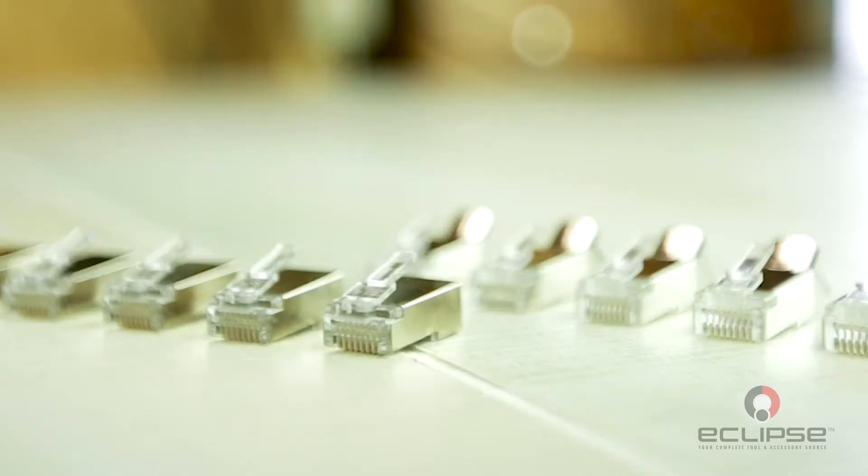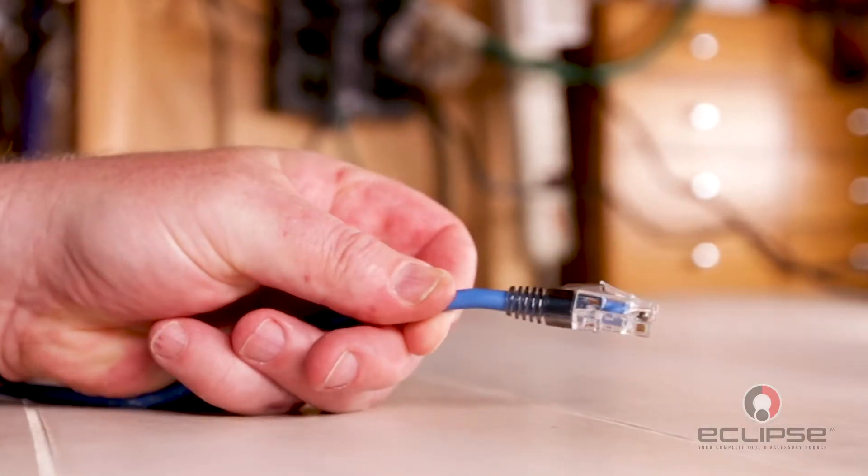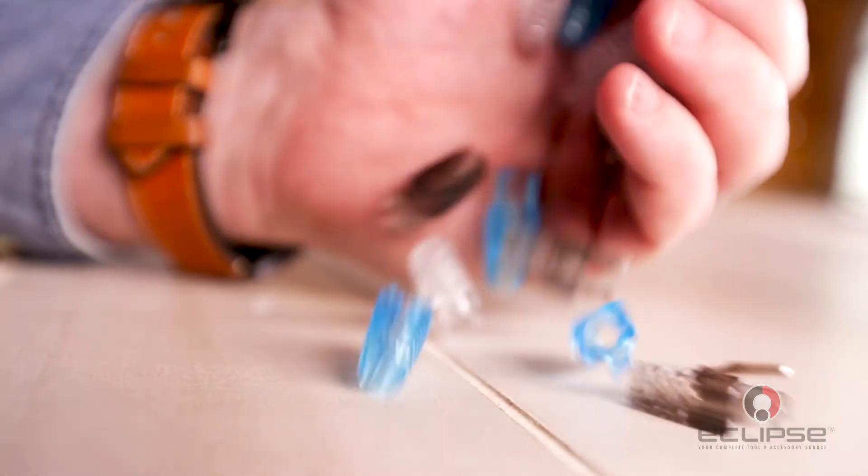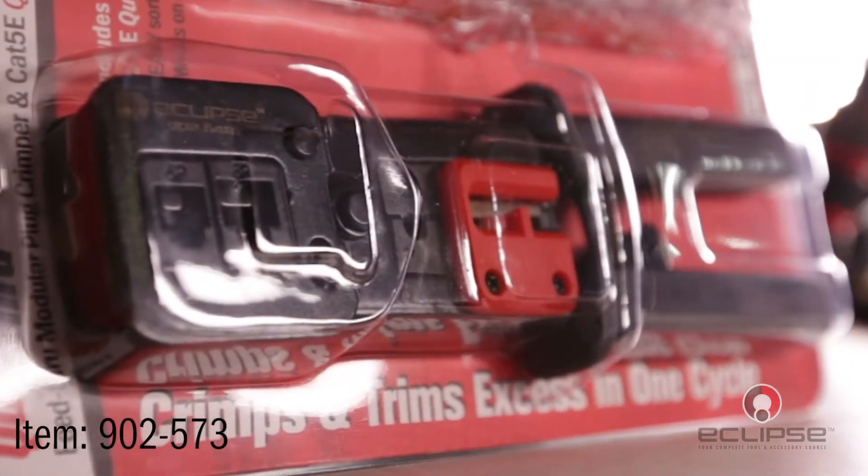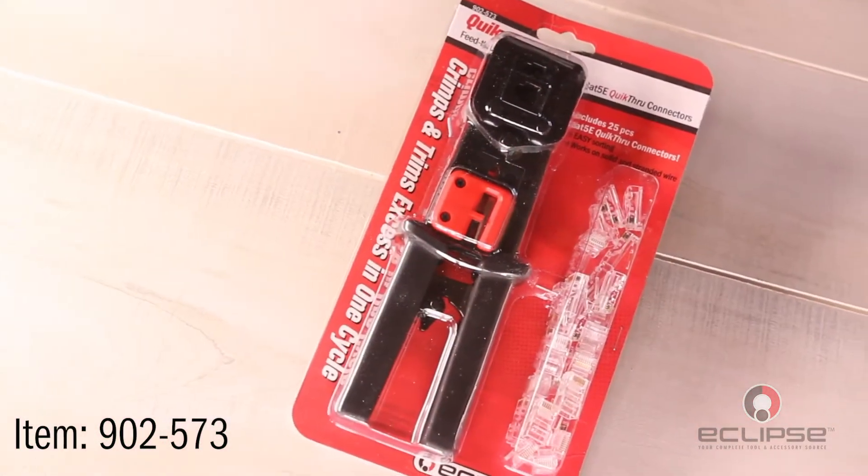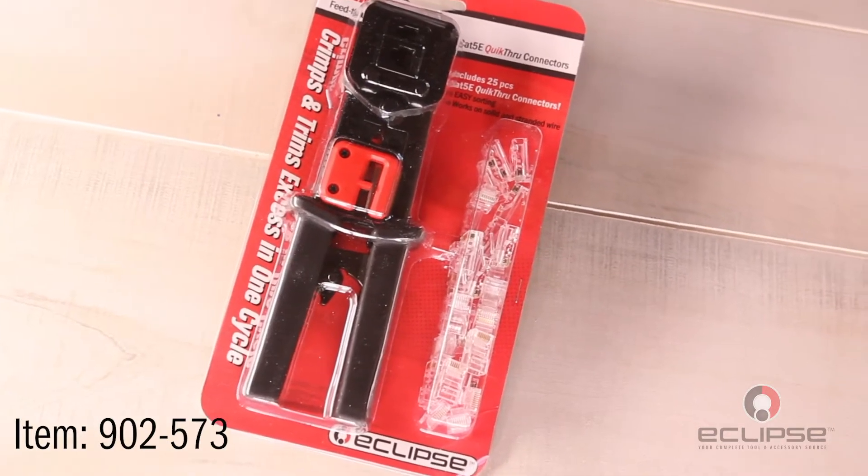Both Cat 5 and 6 strain reliefs to further reinforce your connectors. These are available in clear, gray, and blue. We also offer the Quick Through bundle, a convenient all-in-one package including the Quick Through crimp tool and 25 Cat 5 connectors.